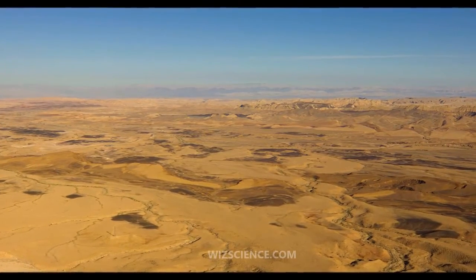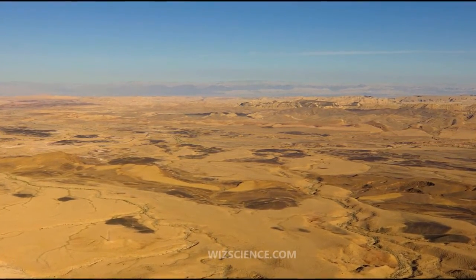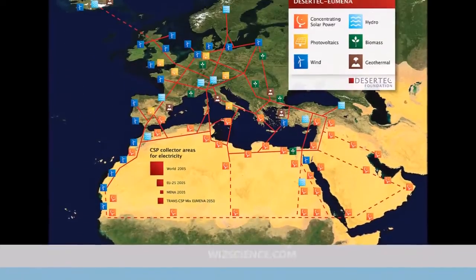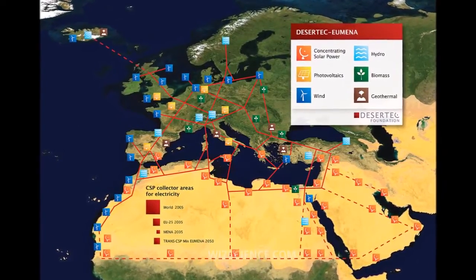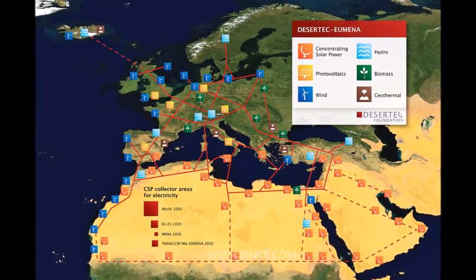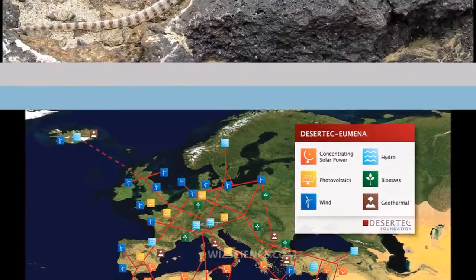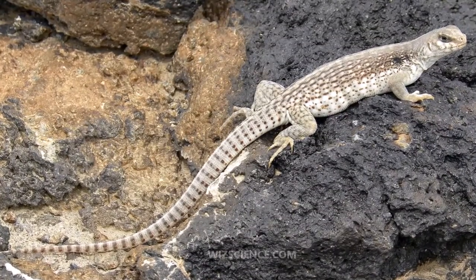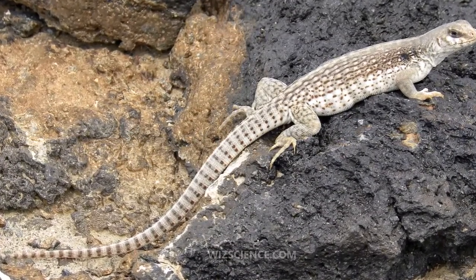A desert is a barren area of land where little precipitation occurs and consequently living conditions are hostile for plant and animal life. The lack of vegetation exposes the unprotected surface of the ground to the processes of denudation.